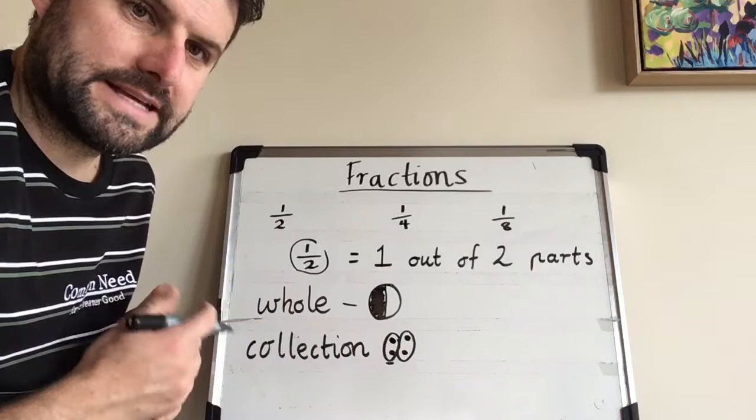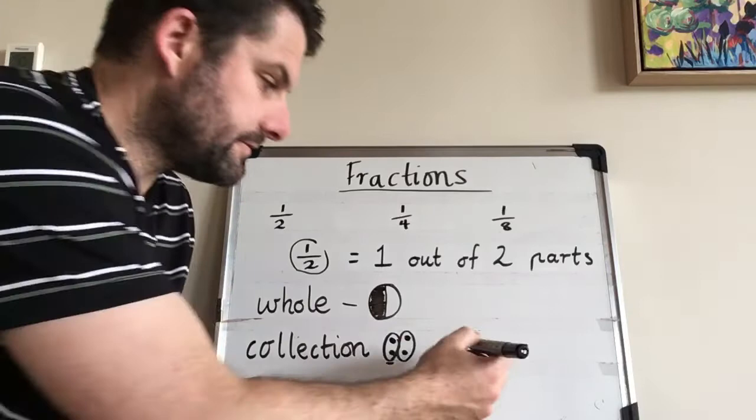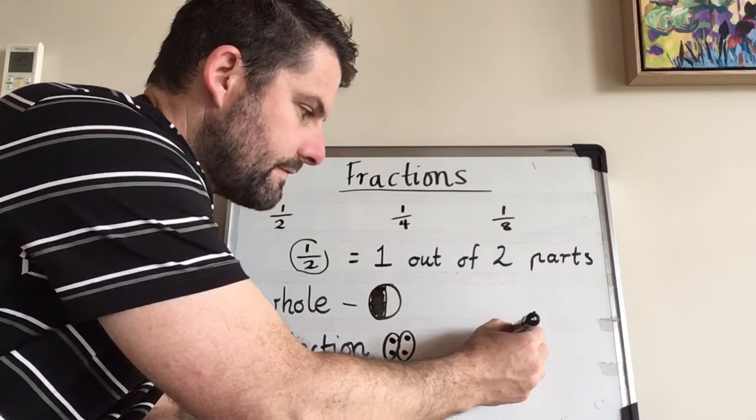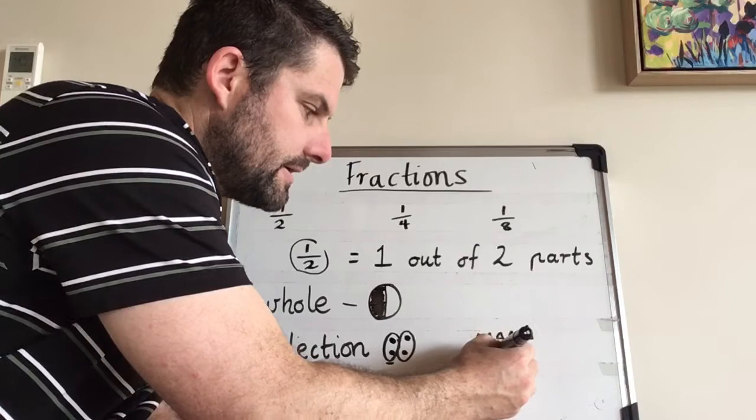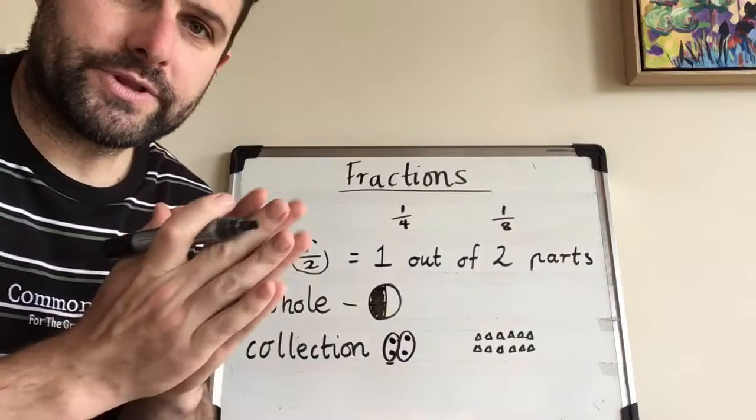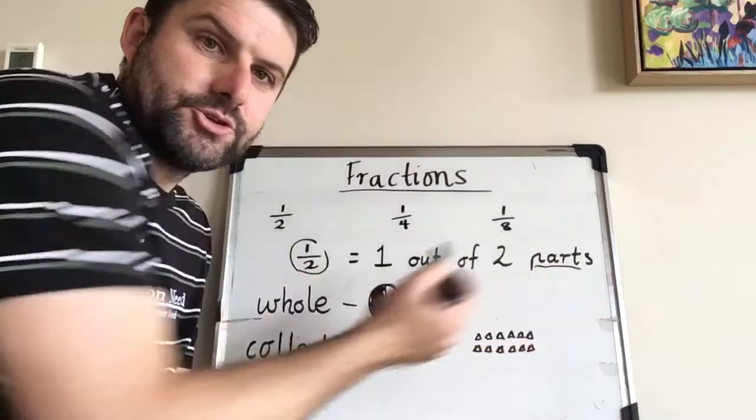Let's have a look at a different collection. Let's say it's a collection of 12. I'll do 12 triangles. One, two, three, four, five, six, seven, eight, nine, ten, eleven, twelve. All right, I need to put these into two groups. So I'm going to break them into two parts now. Two parts.